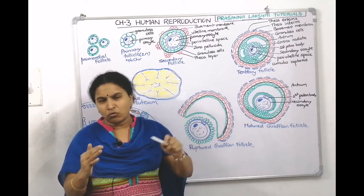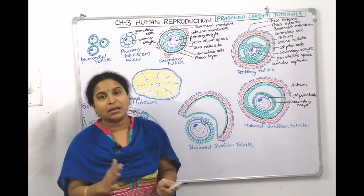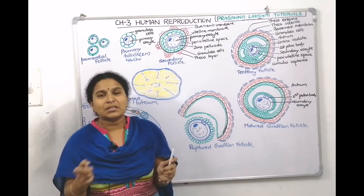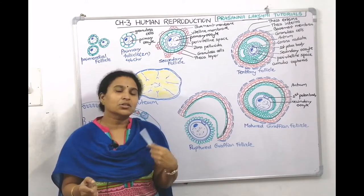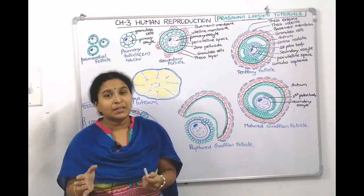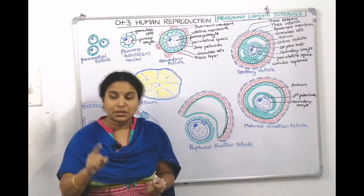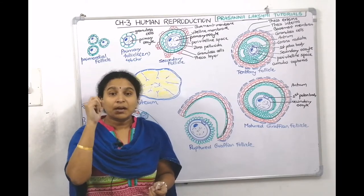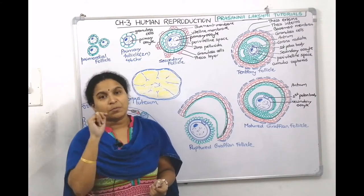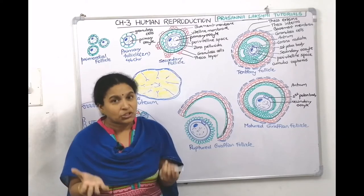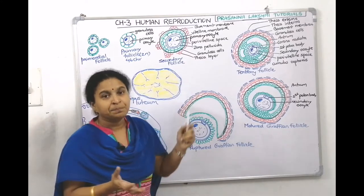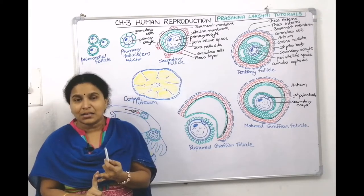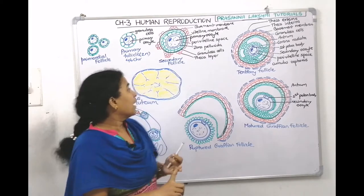After 20 weeks till birth, follicular atresia begins — follicles start degenerating from seven million down to one or two million, and she is born with one to two million follicles. From birth till puberty (ages 10 to 12 in girls), the hypothalamus produces gonadotropin-releasing hormone, which activates the pituitary. The pituitary then releases luteinizing hormone (LH) and follicle-stimulating hormone (FSH), which promote follicle development and maturation.